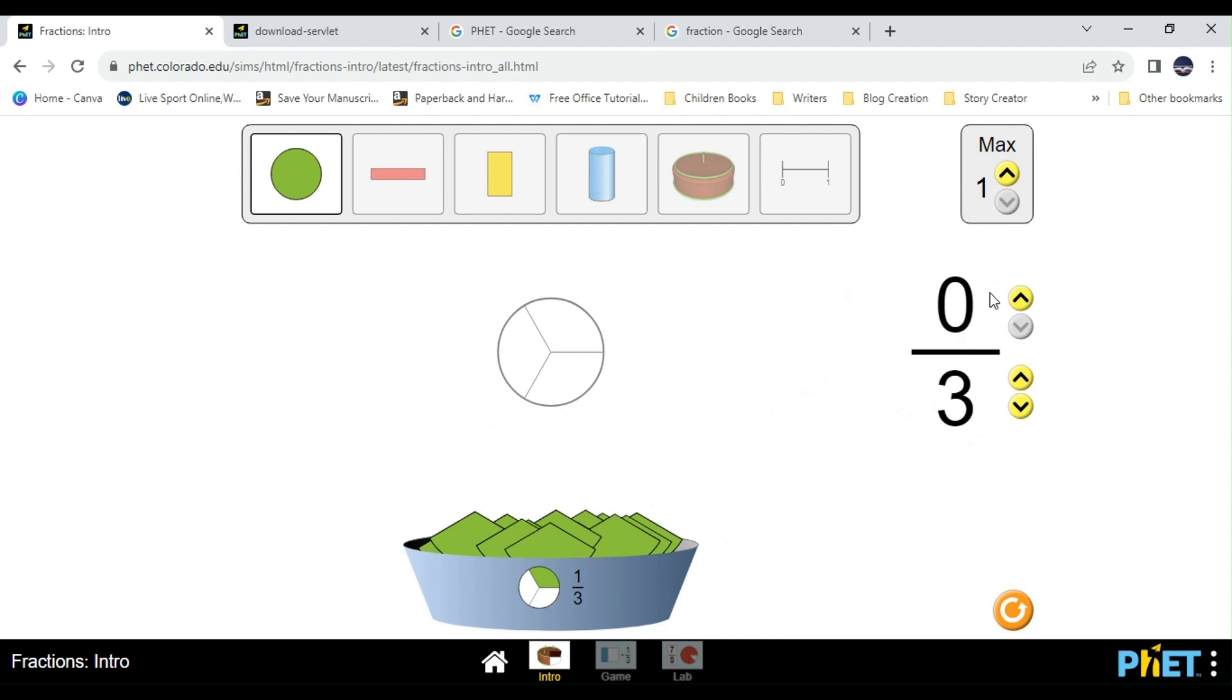Now, if we begin to increase and decrease the numerator, you'll see what happens. Let's try it. Wow, look at this. Look at this now. That tells us that it has one selected part. We have one over three, which is one over three. So we have one selected part. For that reason, we have just one part shaded or selected because we have one over three.